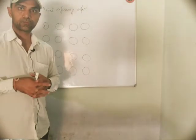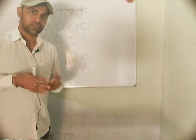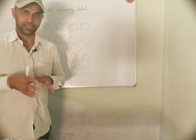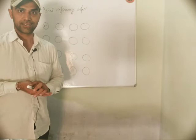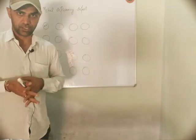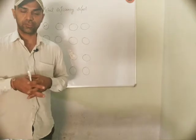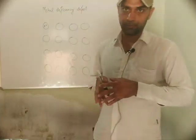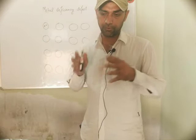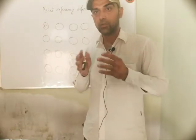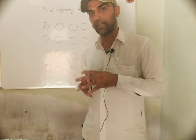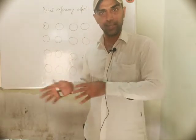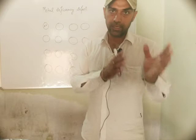Metal deficiency — as the name indicates — can be explained very easily. The definition of metal deficiency defect: in this type of defect, a cation is missing from its lattice site. To maintain the electrical neutrality, a cation of higher charge is placed at a neighboring lattice site.